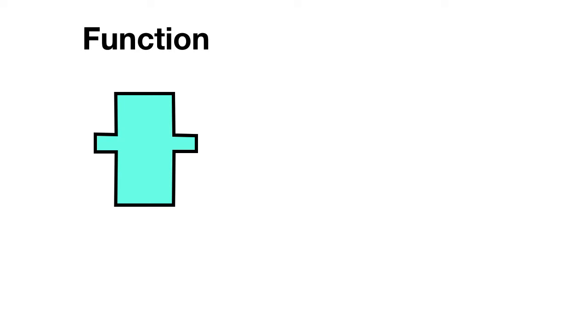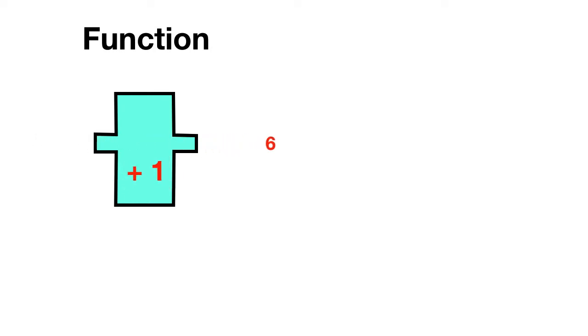Today we're learning about functions and relations. A function is like a machine where you put something in and you get something out. Let's say this function adds 1. If you put in 5, you know that you're going to add 1 and get out 6. If you put in 3, you know that you'll add 1 and get out 4.